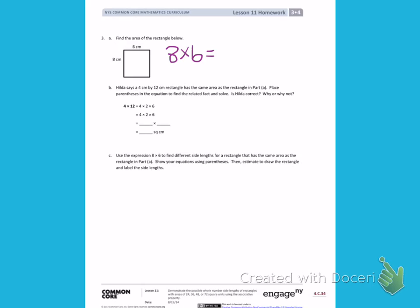Counting by 6 is 8 times: 6, 12, 18, 24, 30, 36, 42, 48. I have 48 square centimeters as my area.